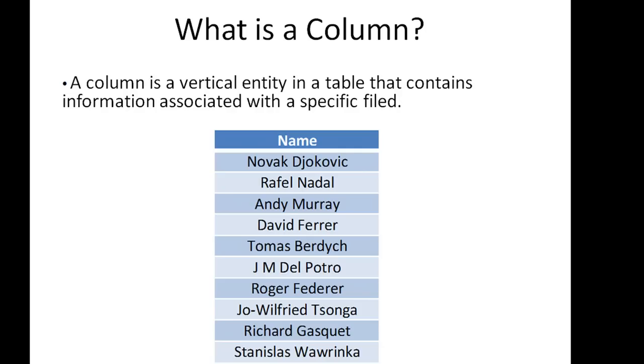What is a column? A column is a vertical entity in a table that contains information associated with a specific field. In the table that we saw for tennis players, we have all these columns. The name is the field, and then you have all the information stored associated with names in columns in the table: Novak Djokovic, Rafael Nadal, and all these are names of tennis players. You have information about names arranged in columns.